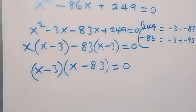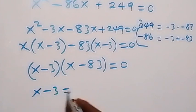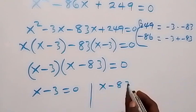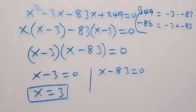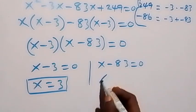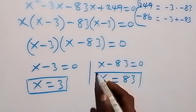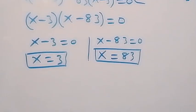From here, either x minus 3 equals 0 or x minus 83 equals 0. So we have x equals 3 or x equals 83. Now let's check from what is given to confirm which one satisfies the equation.